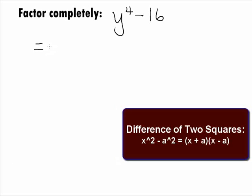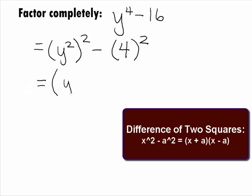We can rewrite our binomial in this form. We can rewrite y to the 4th as a base of y squared being squared, minus and rewrite 16 as a base of 4 being squared. We can factor this as a product of the sum and difference of our bases of y squared and 4, and get y squared plus 4 times y squared minus 4.